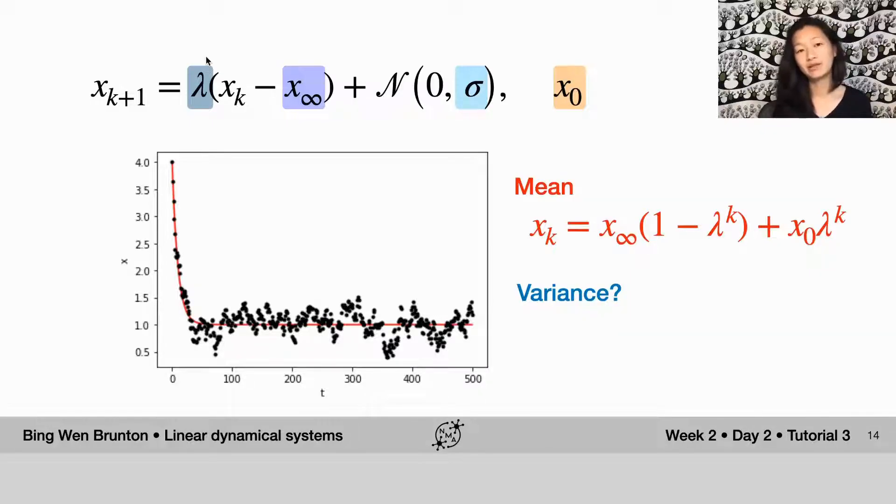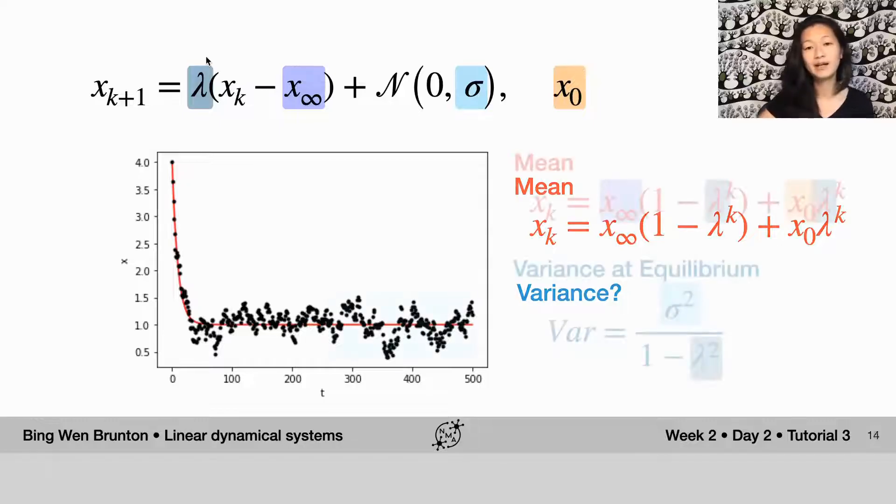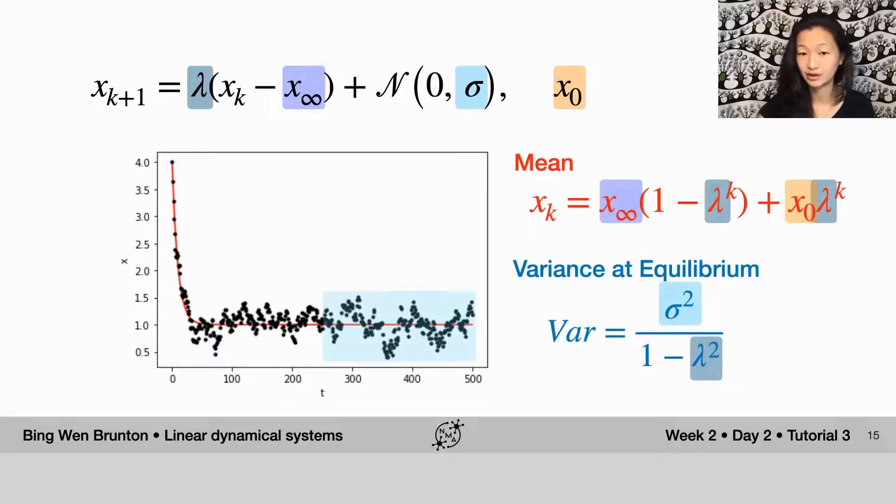The balance of these two respective components, these two parameters, determines the variance of the ultimate solution for the OU process. In particular, we can write the variance of the solution at equilibrium after a long time as the balance between sigma, which is the standard deviation of the random walk process, and lambda, which is this decaying process that's trying to bring it back together.